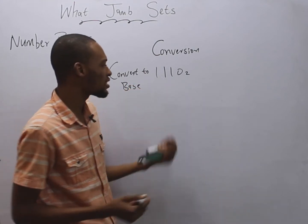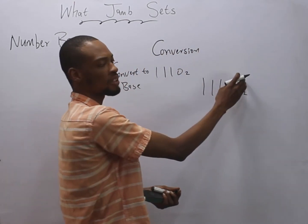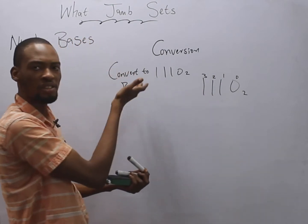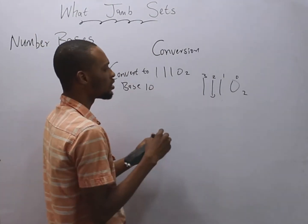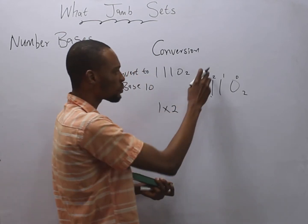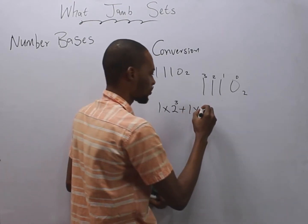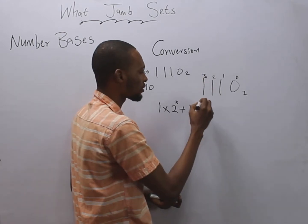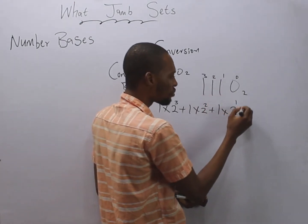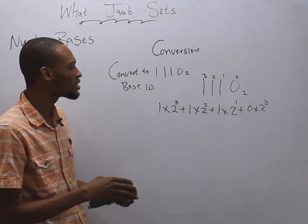What you simply do is bring out the equation. One one one zero is in base two. You look at each digit and assign positional indices starting from zero on the right: zero, one, two, three. Since we are converting to base ten, the first value is one times two raised to the power of three, plus one times two raised to the power of two, plus one times two raised to the power of one, plus zero times two raised to the power of zero.